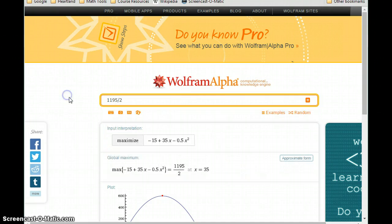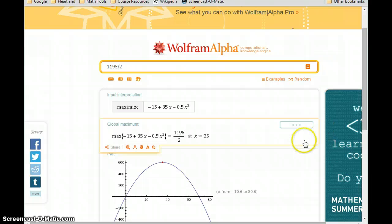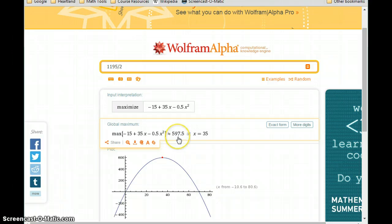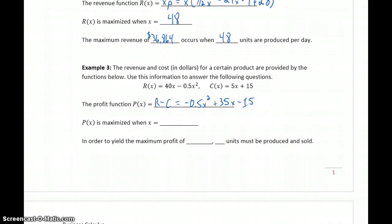So, to get that approximate form, or actually, it's giving us the option right here to get the approximate form. So, at x equals 35, we get our maximized function value of about $597.50. So, x is maximized at x equals 35, so we get a maximum profit of $597.50 when we produce 35 units.